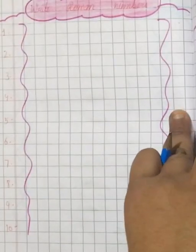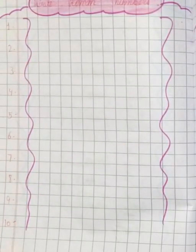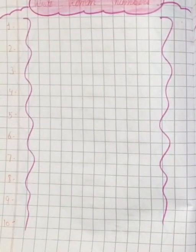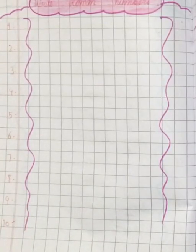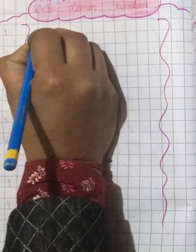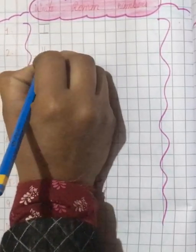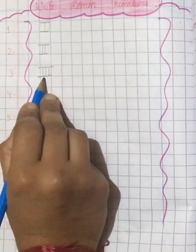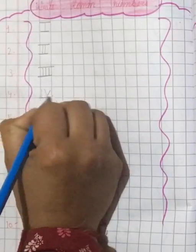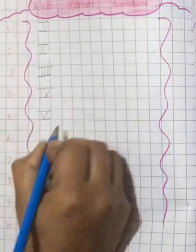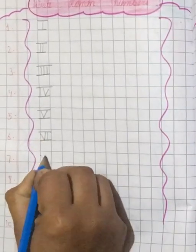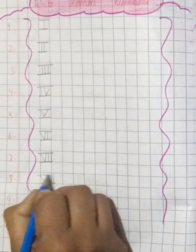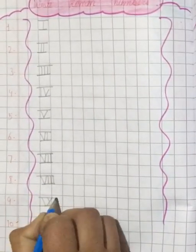Open your math notebook students. And now today's topic is write roman number. So you have to write roman number. So you have to write roman number 1, 2, 3, 4, 5, 6, 7, 8, 9, and 10.